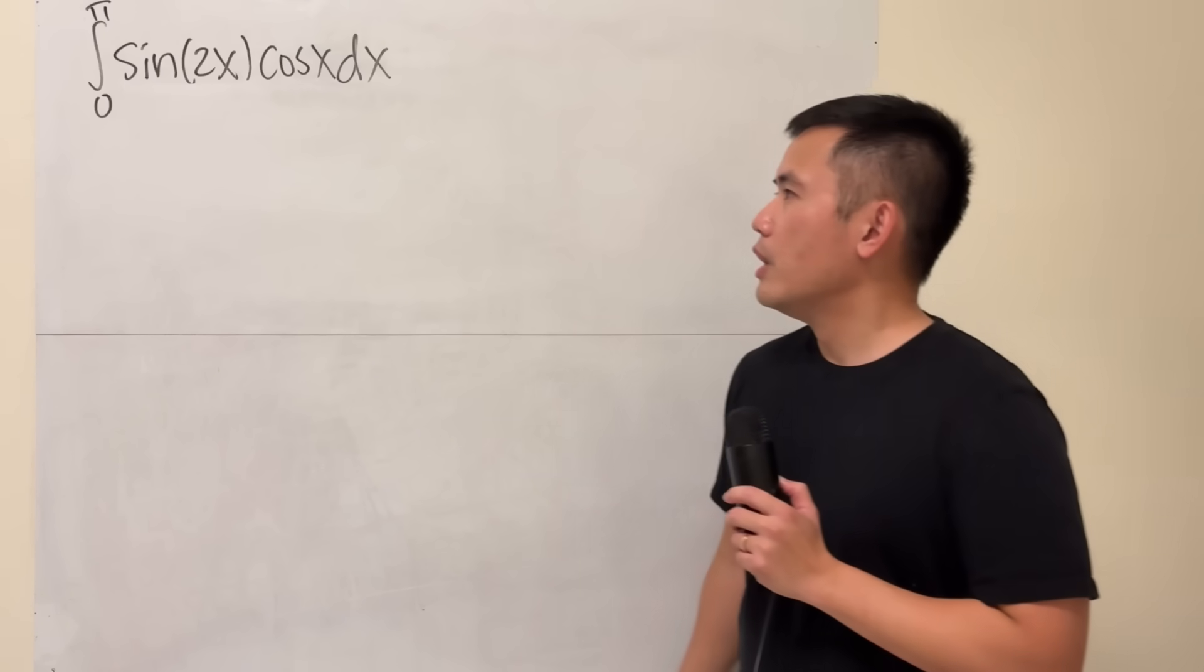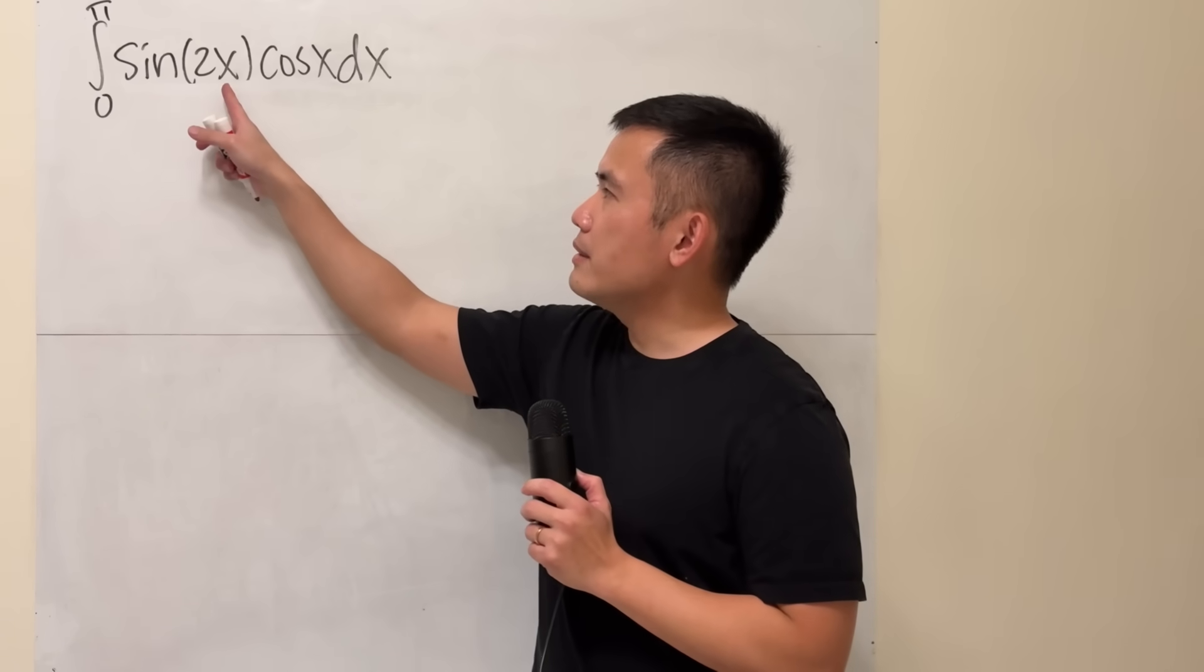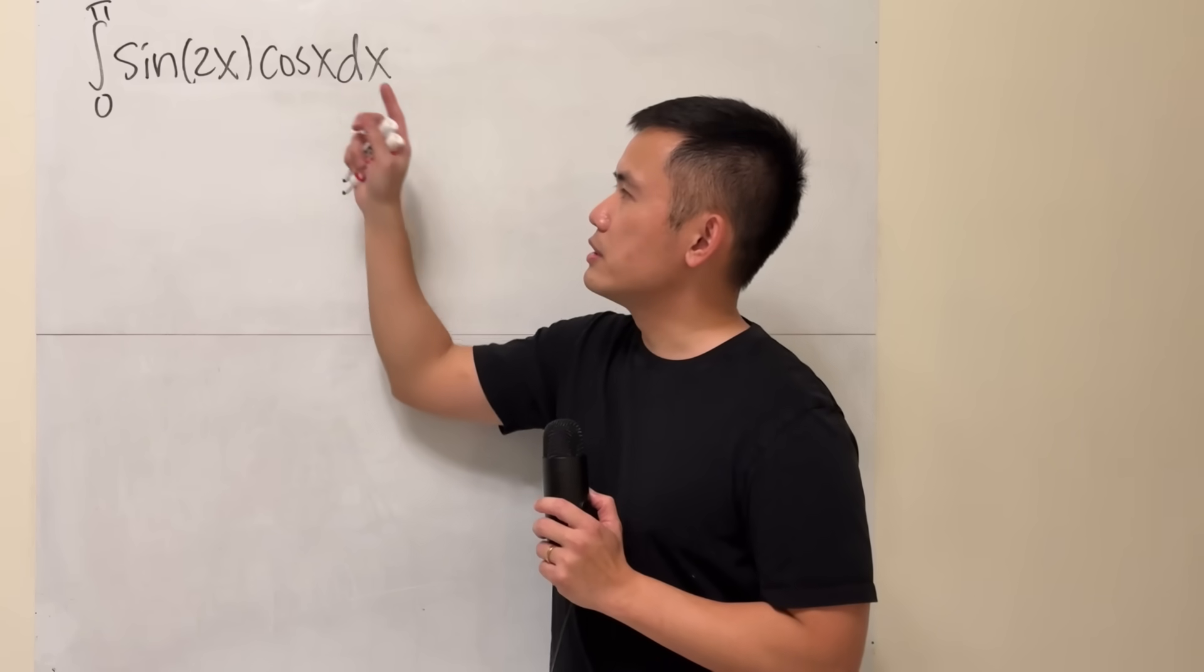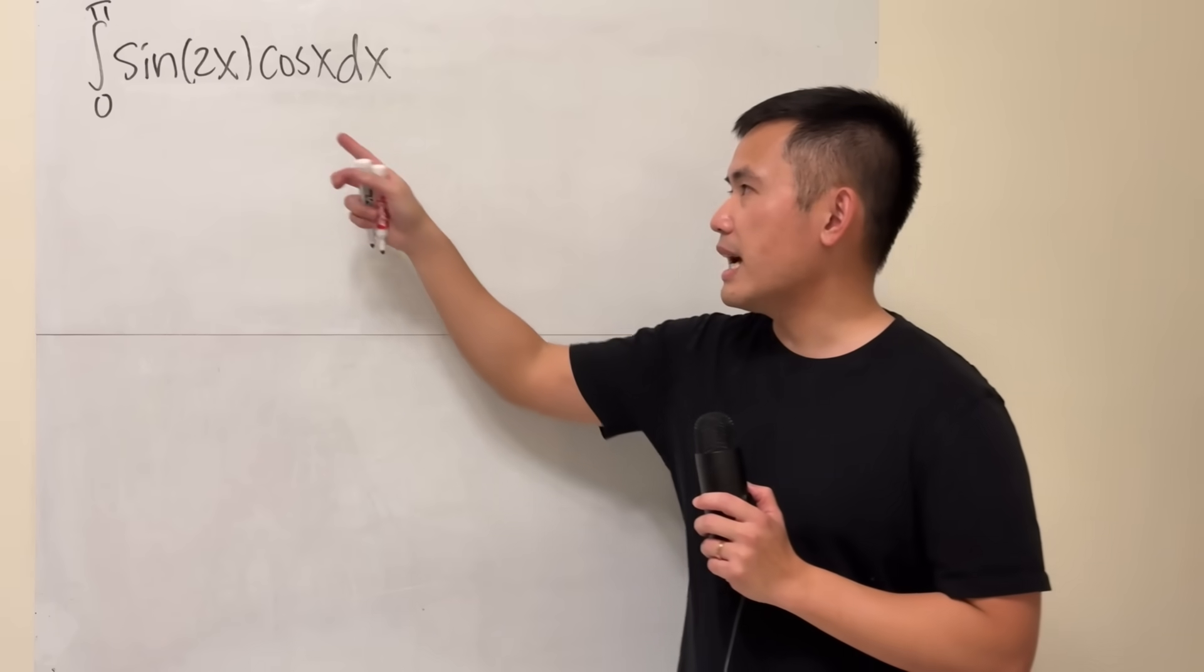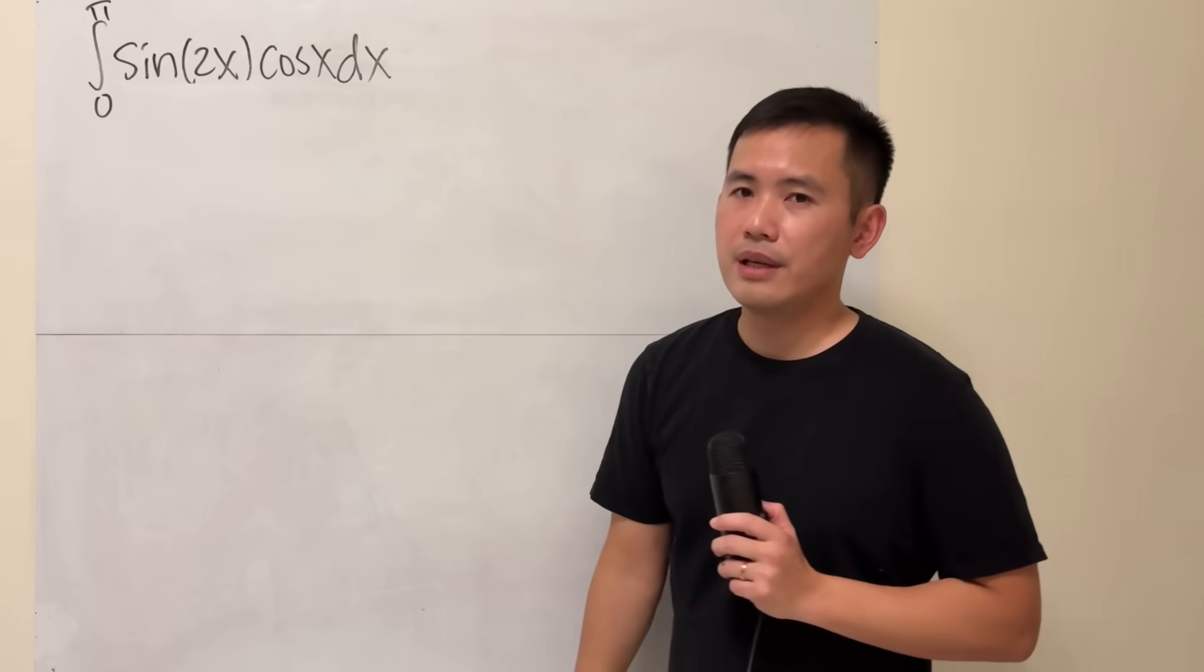So here's one thing: when you have sine cosine, make sure the inputs are the same. But they're not. This is 2x, this is x. But it's okay.